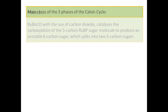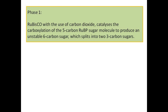Phase 1: Rubisco, with the use of carbon dioxide, catalyzes the carboxylation of the five-carbon RuBP sugar molecule to produce an unstable six-carbon sugar, which splits into two three-carbon sugars.